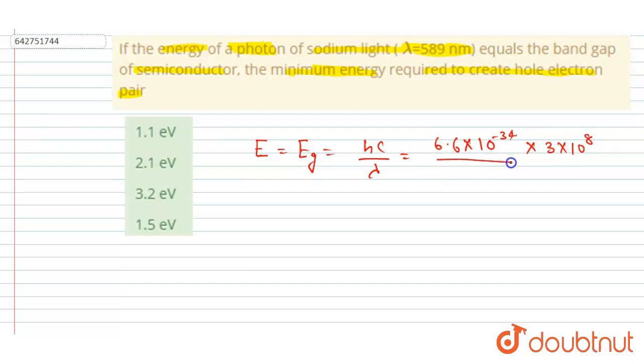In division I will write the wavelength, that is 589 nanometer. So you can convert it into meter by multiplying it 10 to the power minus 9.